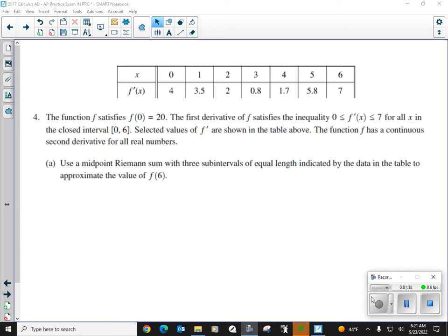Okay. Selected values of f prime are shown in the table above. The function has a continuous second derivative for all real numbers. And part A asks us, use a midpoint Riemann sum with three subintervals of equal length indicated by the data in the table to approximate the value of f of six.